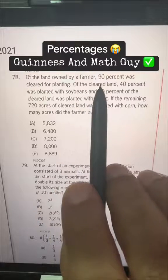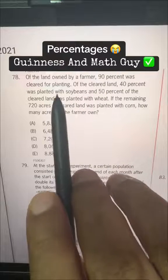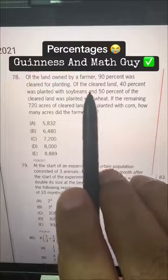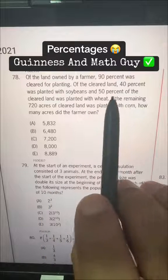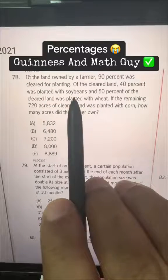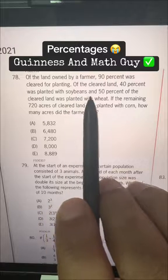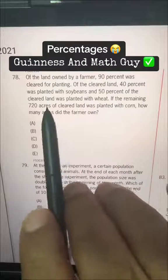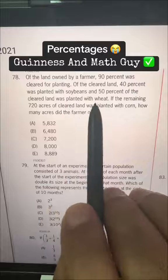Of the land owned by a farmer, 90% was cleared for planting. Of the cleared land, 40% was planted with soybeans and 50% of the cleared land was planted with wheat.